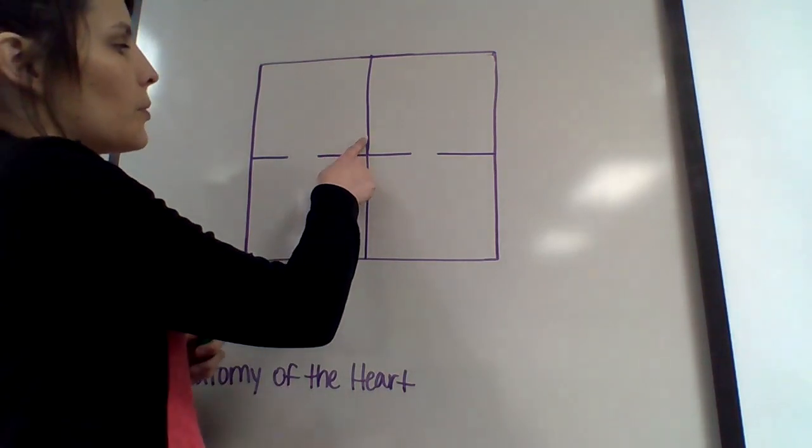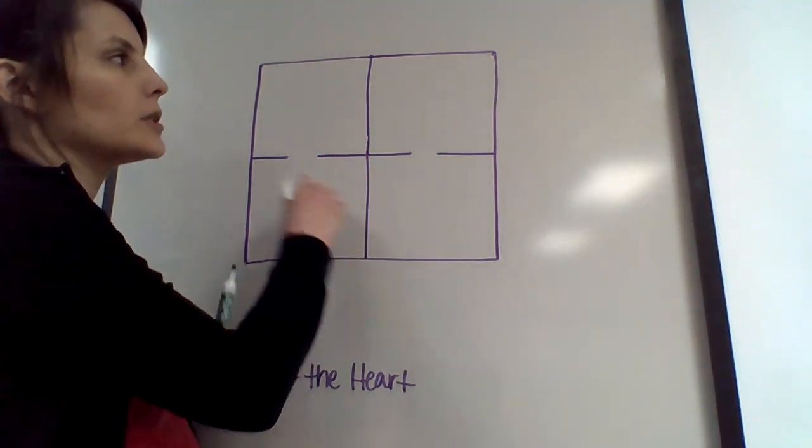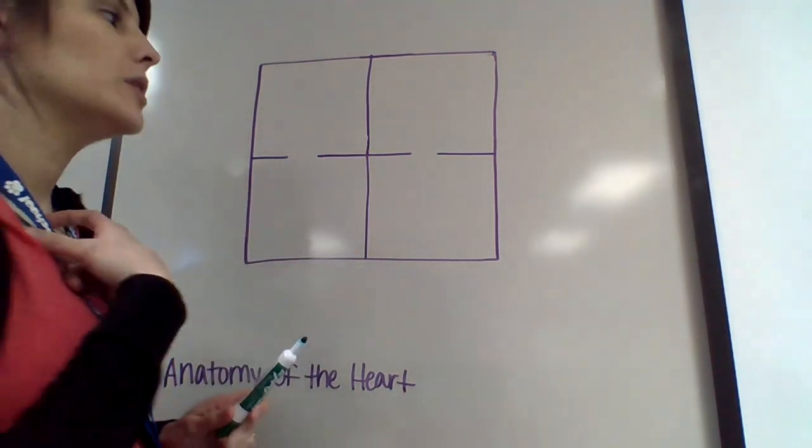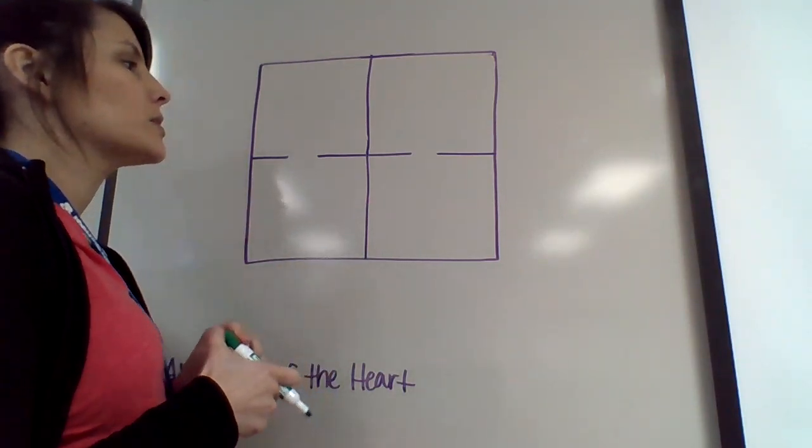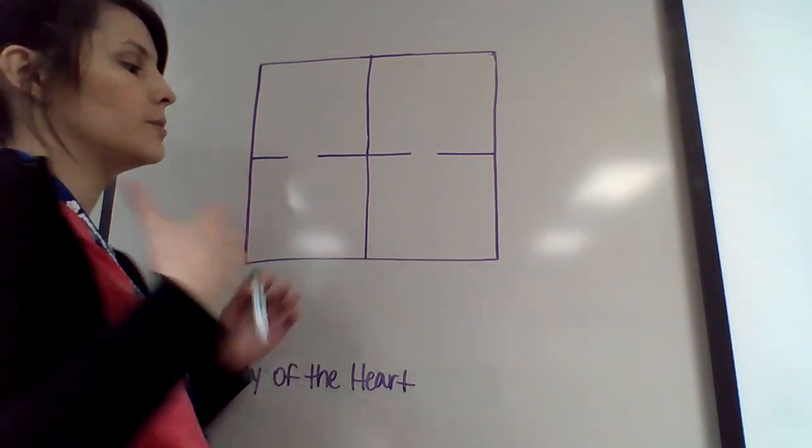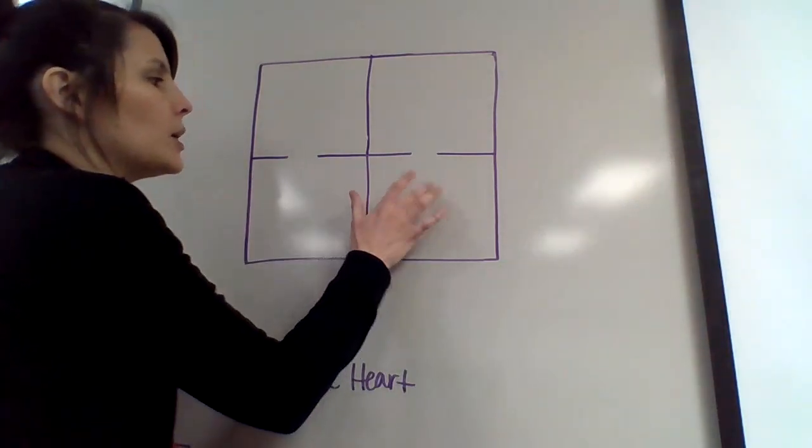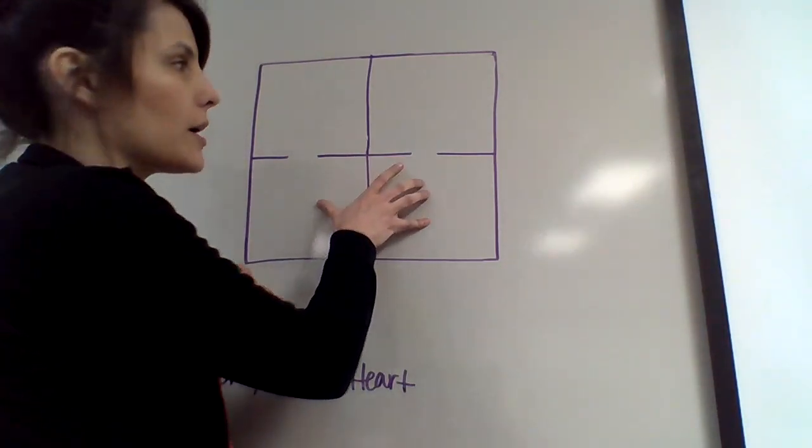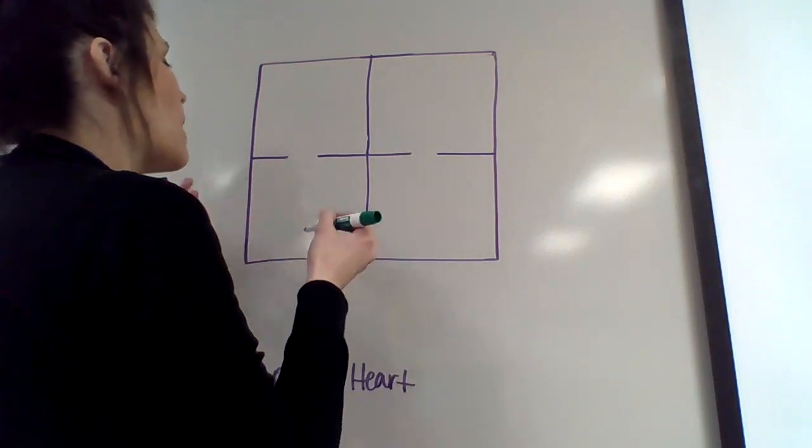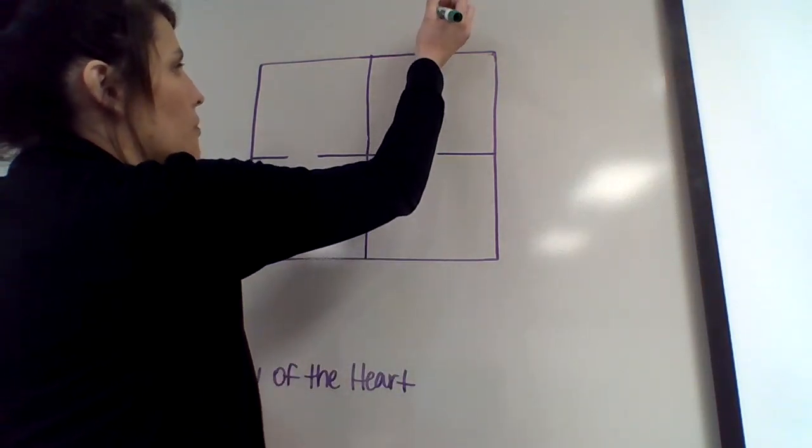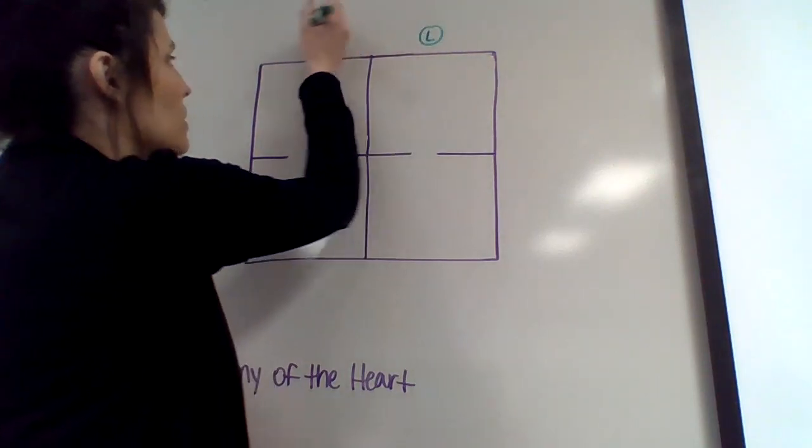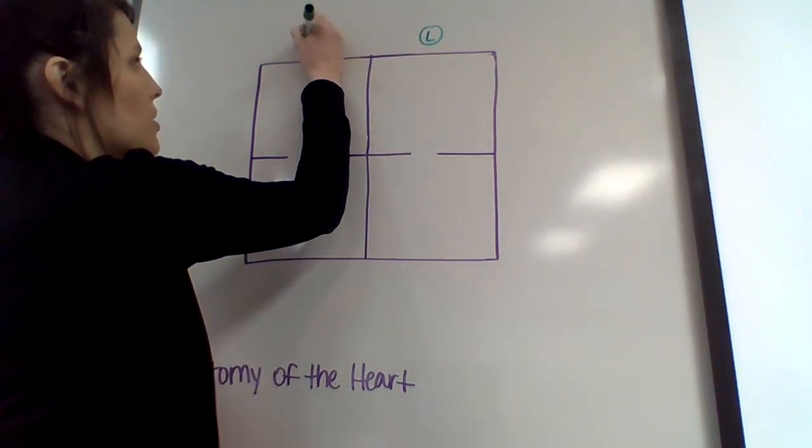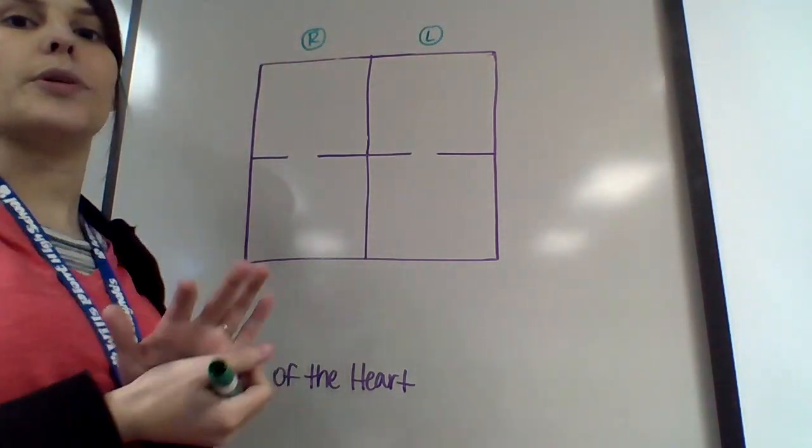When we look at a person's heart, we're always going to talk about their heart versus our heart, so the left and right becomes opposite to us. Because I have my left and right, because I'm referring to this heart, it becomes opposite to me. So this over here would be the left side of the heart, so I'm just going to put a little L, and then this will be the right side of the heart over here, so I'm going to put an R, just so we don't get confused.